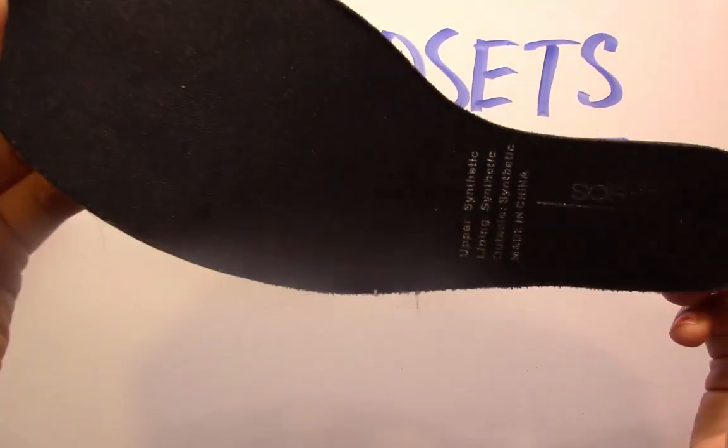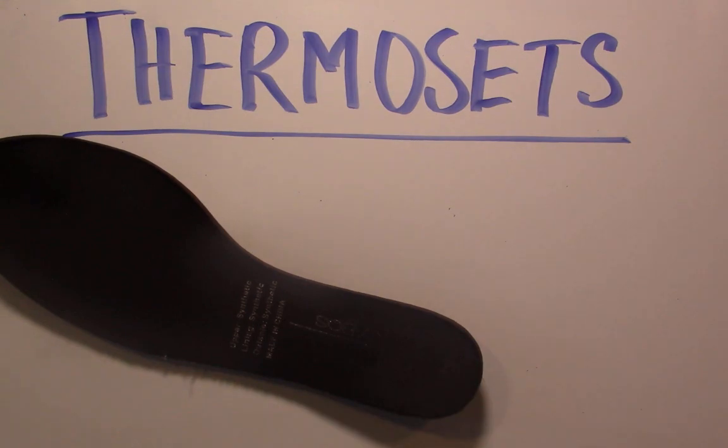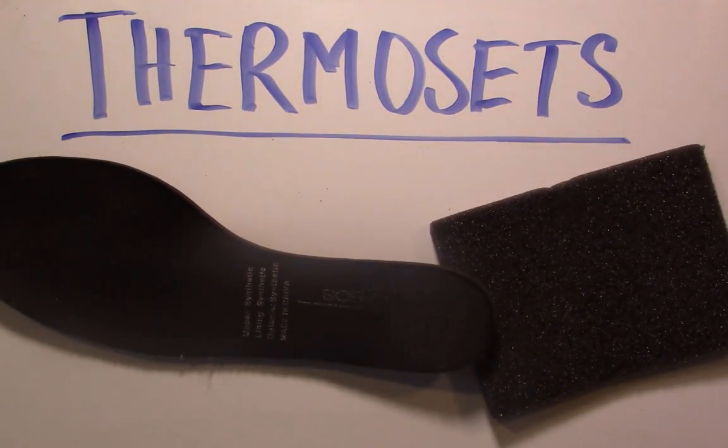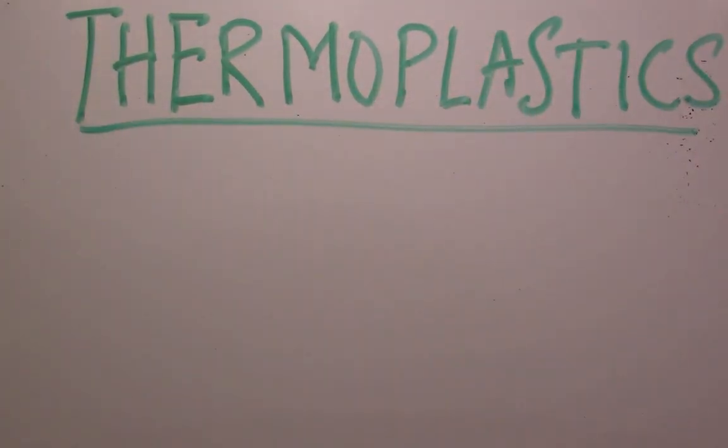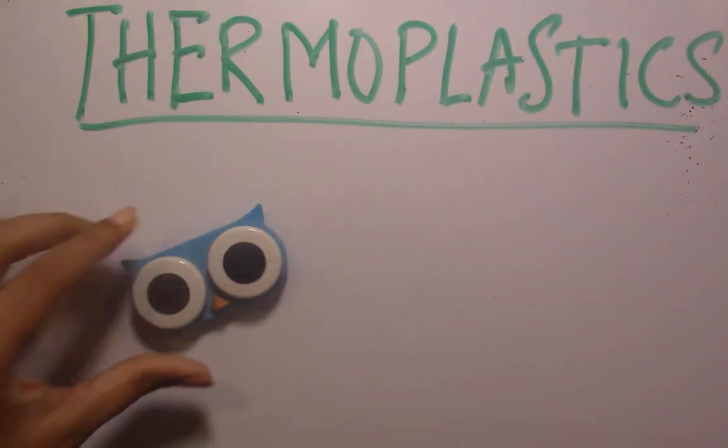Some common examples of thermosets are these shoe soles or this piece of foam. Some common thermoplastics are this contact lens case or this marker.